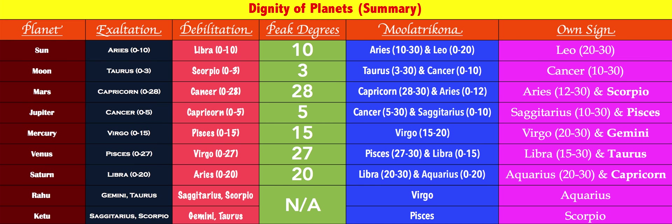So to summarize: best is Sun in 0–10 degrees of Aries, second best is 10–30 degrees of Aries, third best is 0–20 degrees of Leo, and fourth best is 20–30 degrees of Leo. For the Moon: exaltation is in 0 to 3 degrees of Taurus in Krittika nakshatra's fourth pada, and debilitation is in 0 to 3 degrees of Scorpio in Vishakha nakshatra's fourth pada. In Taurus 3–30 and Cancer 0–10 it is in moolatrikona; Cancer 10–30 is its own sign.